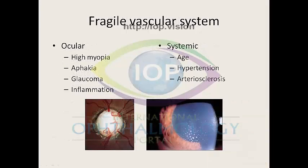Loss of scleral rigidity or choroidal fragility are responsible for the association between suprachoroidal haemorrhage and axial myopia. Other ocular conditions include aphakia, glaucoma, and ocular inflammation. It has been hypothesized that these ocular conditions cause necrosis of the vascular system. Systemic conditions include those that cause arteriosclerotic vasculature, for example age, hypertension, and arteriosclerosis.